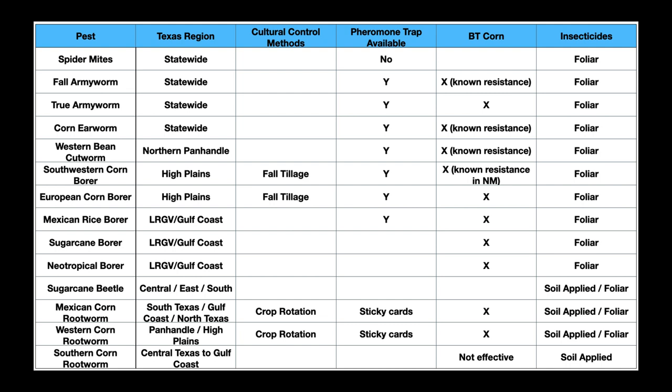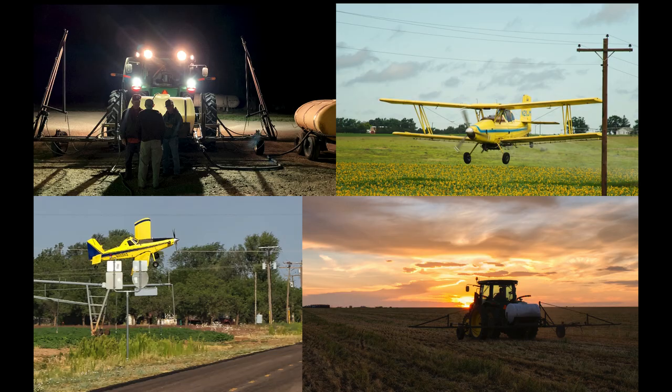All of the caterpillar species, and Mexican and western corn rootworm, can be controlled by BT corn. There are insecticide options for all of these pests, but application timing is critical for most of them, so timely scouting and detection is important.